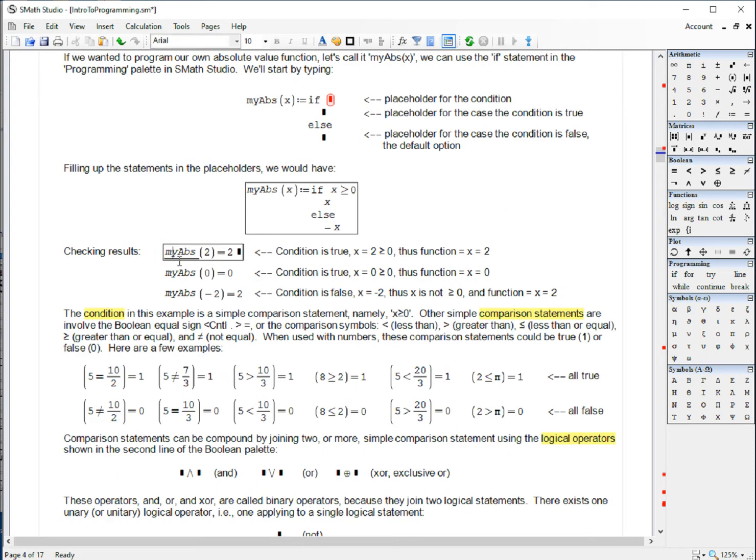Checking it, myabs of two is two, myabs of zero is zero, myabs of minus two is equal to two. The condition is true in this case, the condition is true in this case, the condition is false, so we've got to the second option.